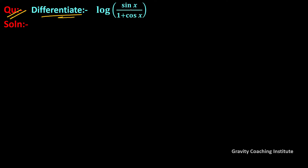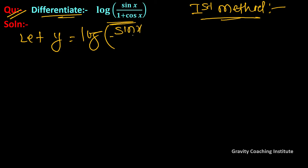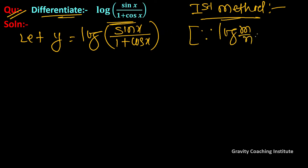Question: differentiate log(sin x / (1 + cos x)). We will solve this question using two different methods. Here is the first method. Let y equal to log(sin x / (1 + cos x)). Use the formula log(m/n) equal to log m minus log n.